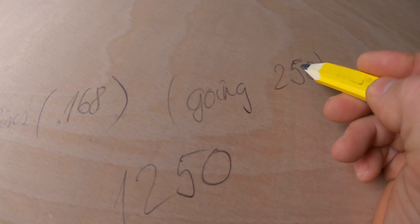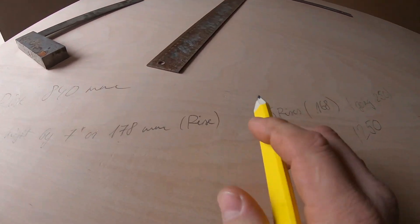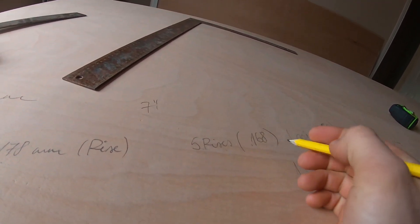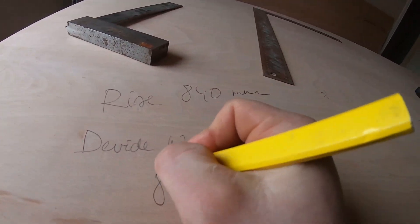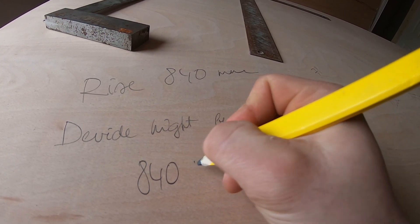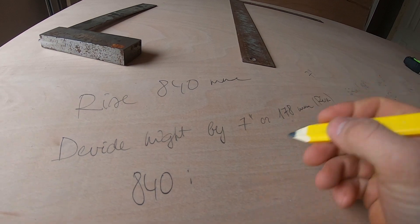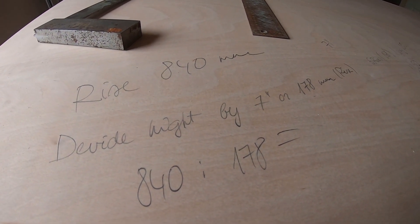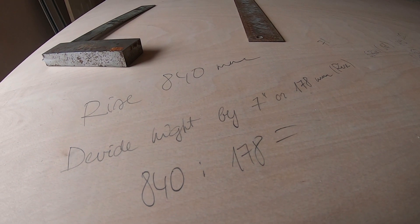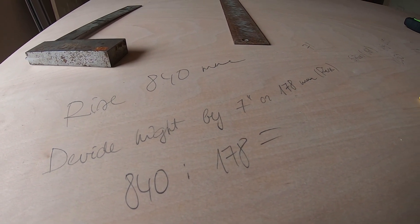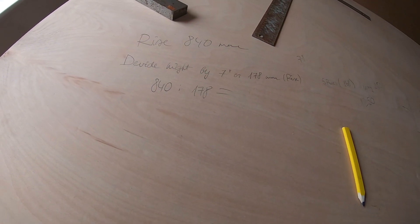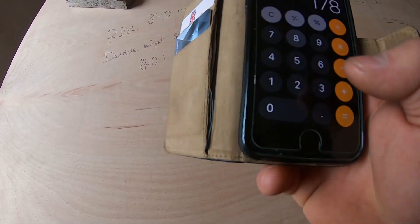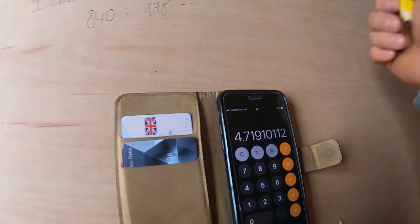The going is on average 250 long. Rise is 7 inches or 170 millimeters. So for my case, my rise is 840 millimeters, so I divide by 178 millimeters. I get 4.7.